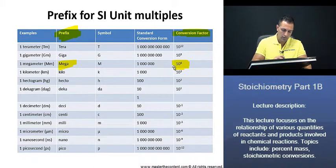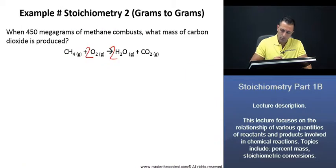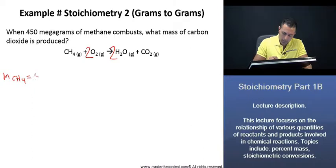Now that we know that, let's go back and fill that in. Thus, the mass of methane, right? We're being given 450 megagrams. We'll just convert that to grams.